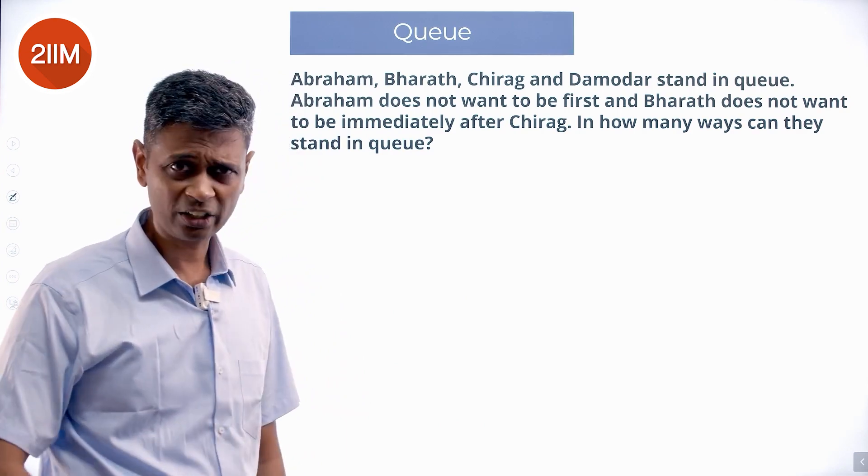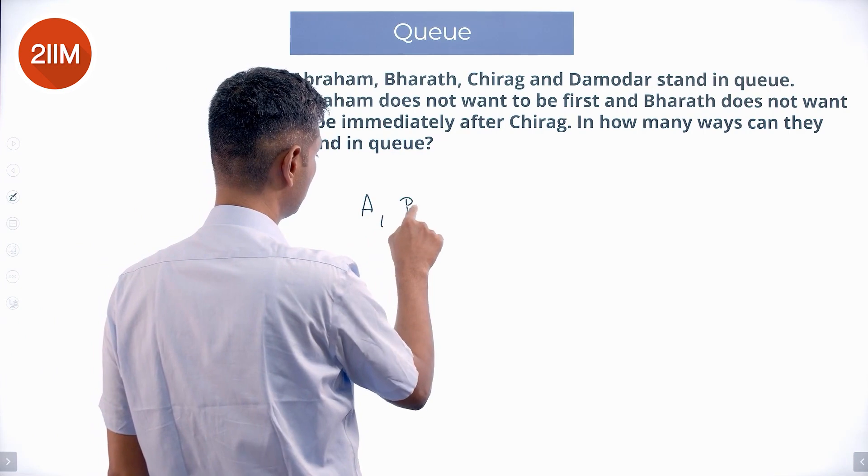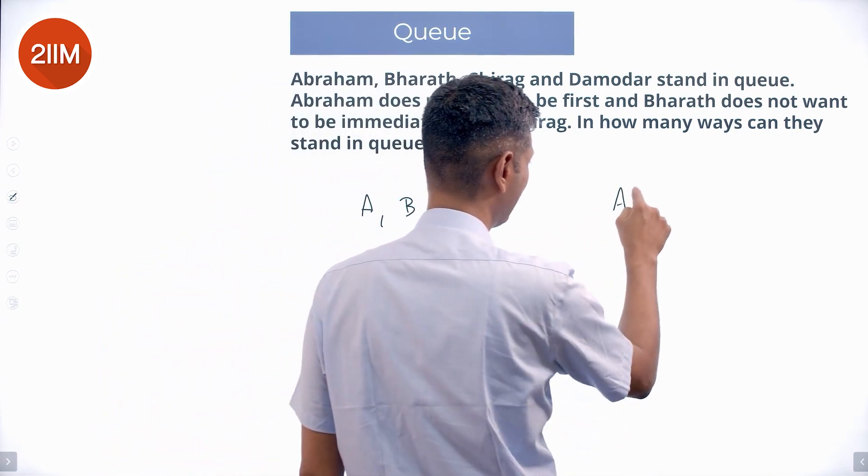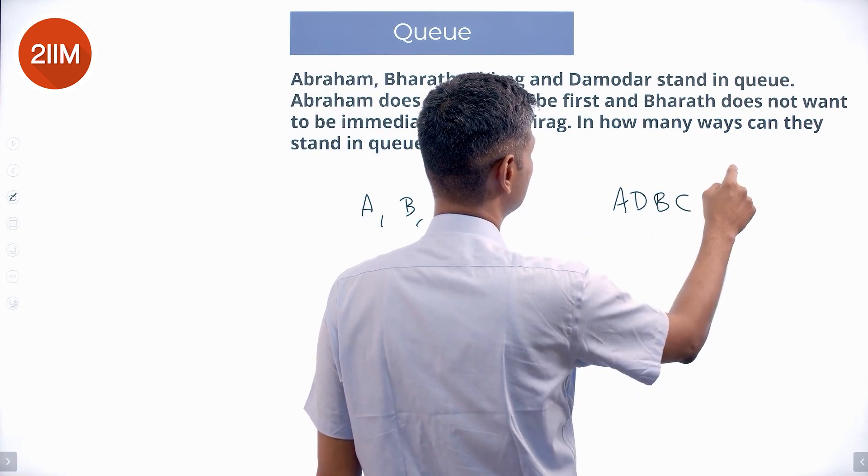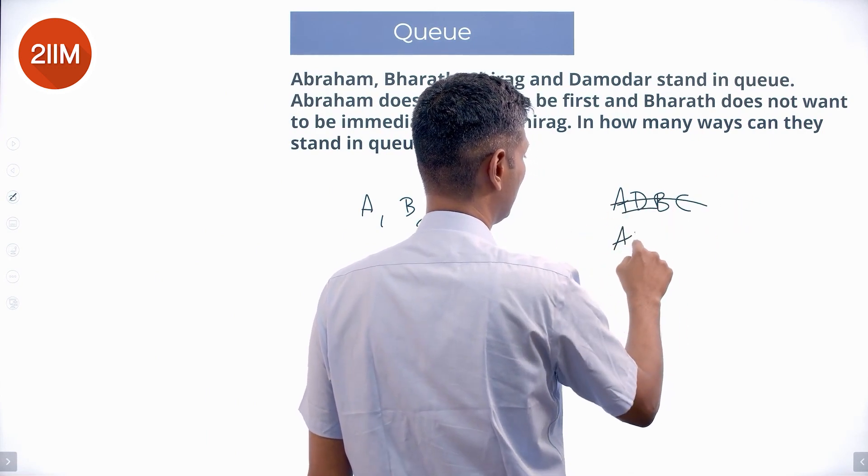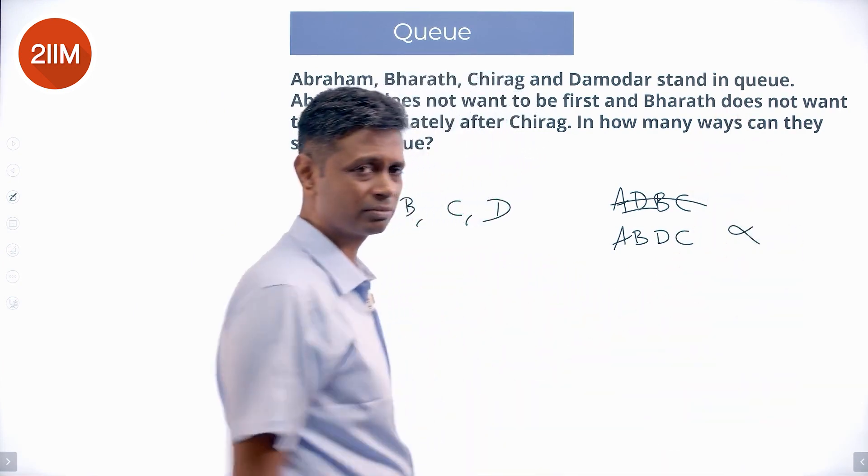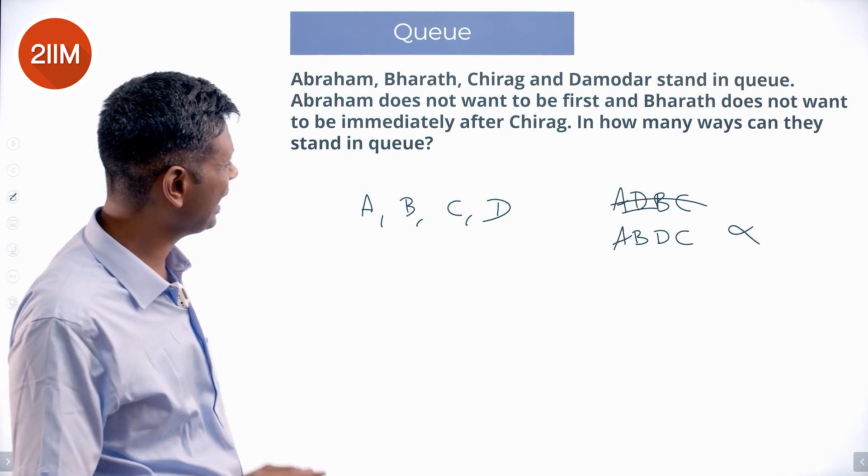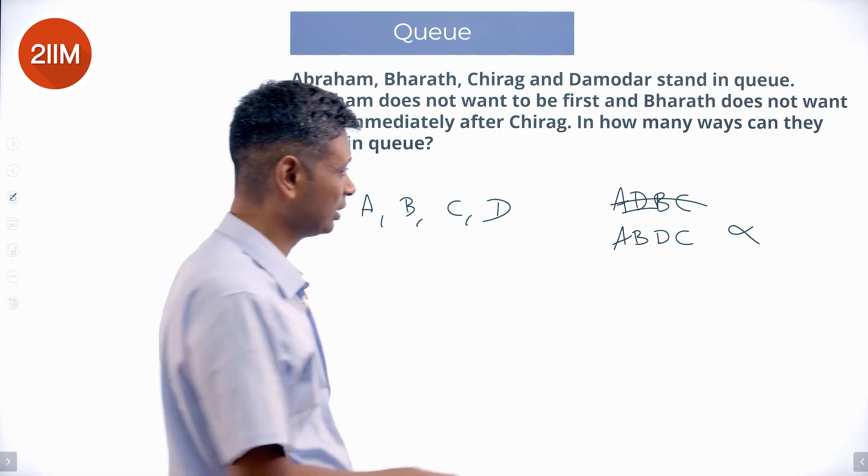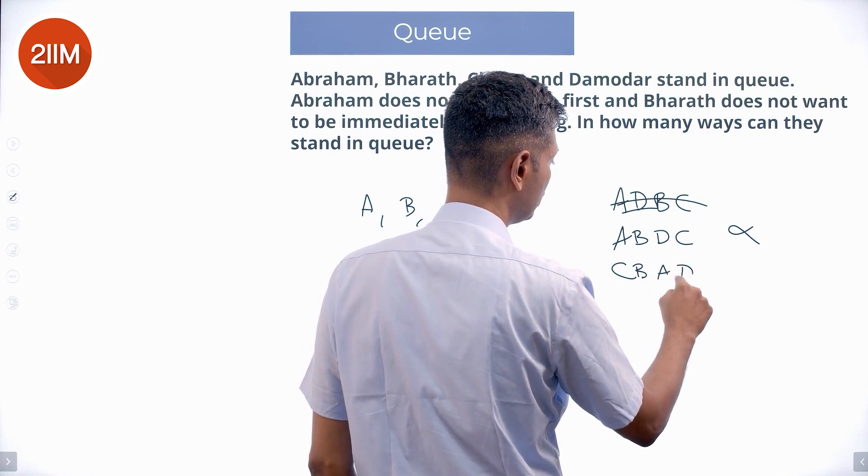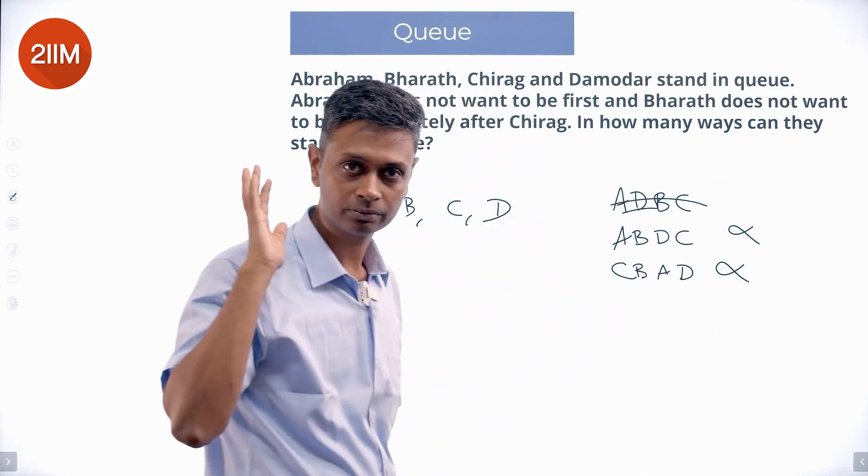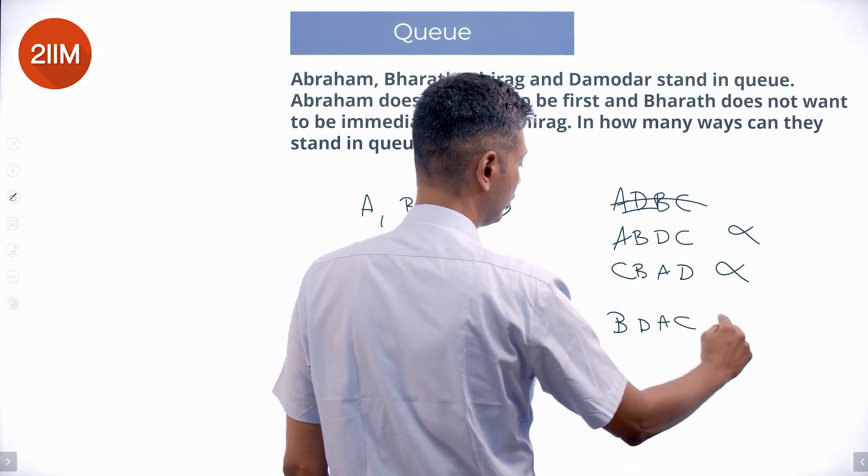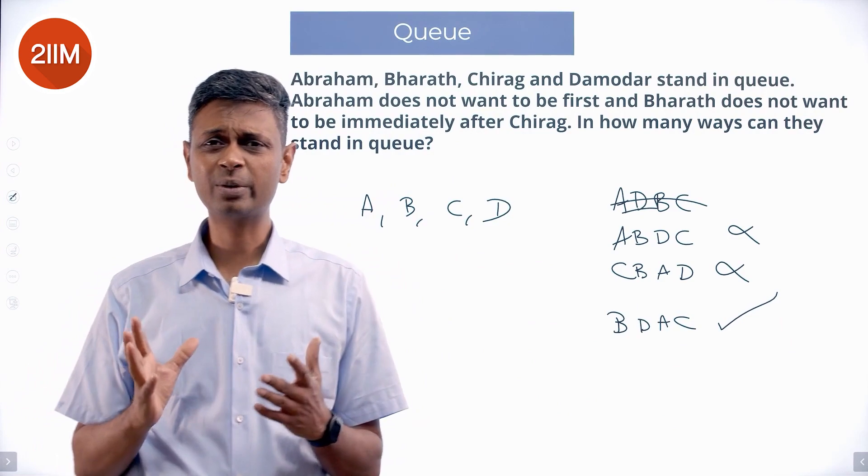In how many ways can they stand in a queue? A B C D, they stand in a queue something like this. A B D C is not possible. Abraham doesn't want to be first and Bharat does not want to be immediately after Chirag. C B A D is also not possible. Starting with B then going to D then A then C, this is possible. First of all we need to understand the question.